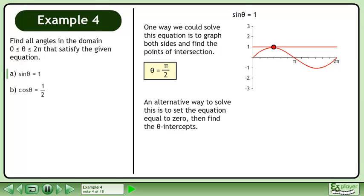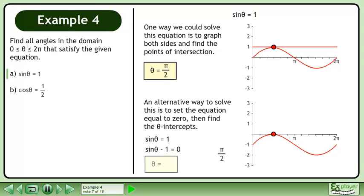An alternative way to solve this is to set the equation equal to 0, then find the θ-intercepts. We write sinθ equals 1. Bring all terms to the left side of the equation so it equals 0. Draw the graph. The θ-intercept occurs at π over 2.